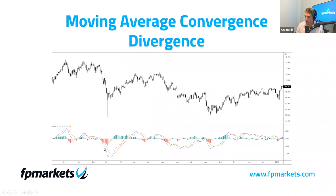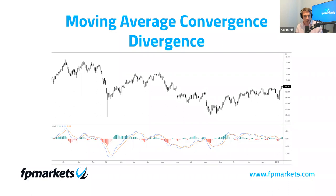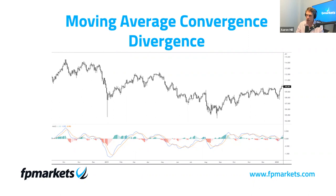The MACD line is the blue line on the chart, formed by subtracting the 26-day EMA from the 12-day EMA. We then work with what's known as a signal line — the orange line — which is essentially a nine-day EMA of the MACD line, so it's a derivative of the MACD line. The MACD line fluctuates above and below a zero line, which shows how the moving averages converge, diverge, and cross — hence the term Moving Average Convergence Divergence.